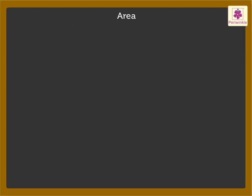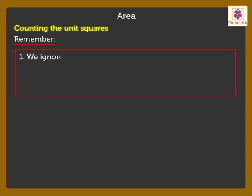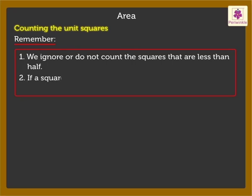When finding the area of a plain figure by counting unit squares, remember: 1. We ignore or do not count the squares that are less than half. 2. If a square is more than half, we count the area as one square unit.